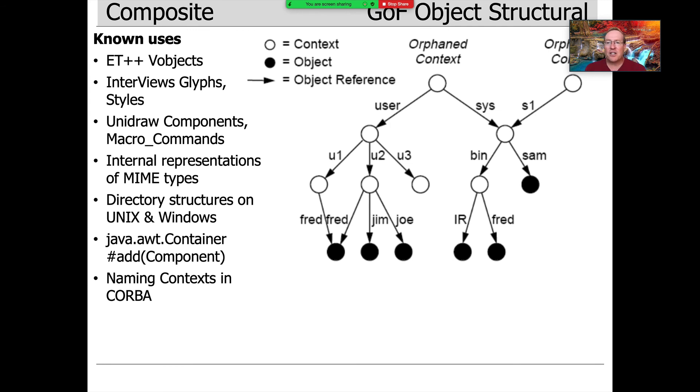There are lots and lots of known uses of composite. This is very common in windowing frameworks, windowing toolkits. It's very common for ways to represent MIME types, which are inherently recursive, if you think about how you encode MIME types for things like email and so on. Obviously, directory structures in Unix and Windows, very heavily composite-based because they're recursive structures. In the world of Java, there's this thing called the AWT container, which is a composite.